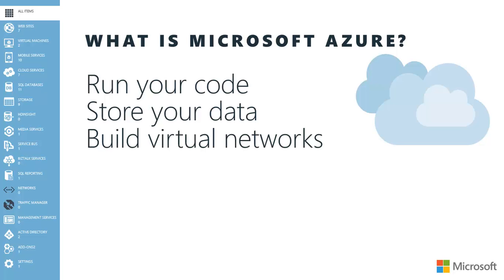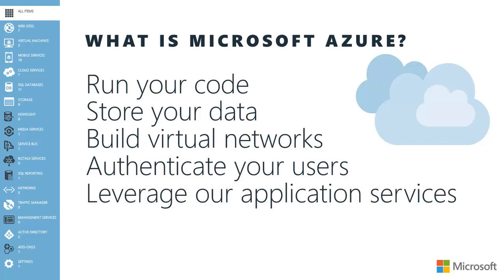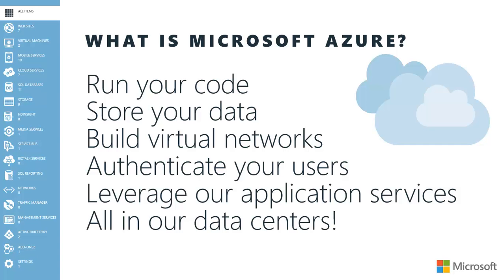You can also add third-party databases like MongoDB or MySQL. You can build virtual networks that allow you to connect virtual machines running in Azure to your own on-premises networks, and let virtual machines connect to each other. You can authenticate your users using Active Directory or federation services that let you use third-party authentication mechanisms like Facebook, Google, Twitter, and Yahoo. And finally, you can leverage application services — service buses, media streaming, BizTalk, and a whole host of third-party add-ons — all running in Microsoft's data centers.